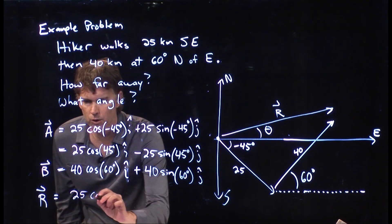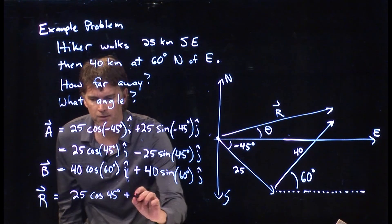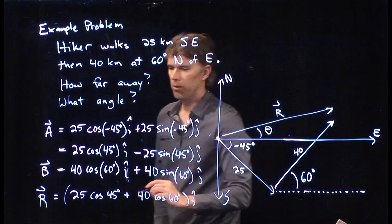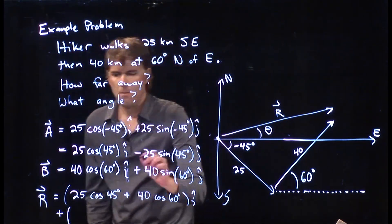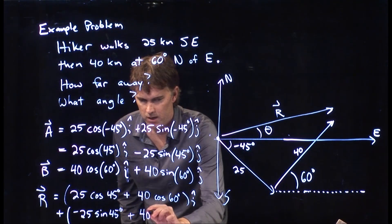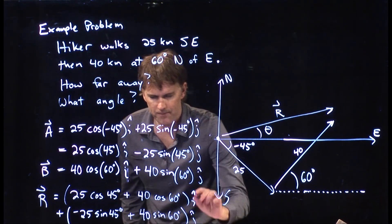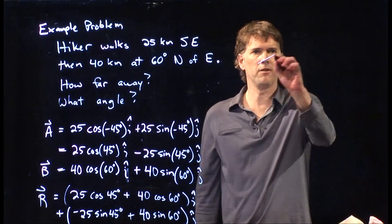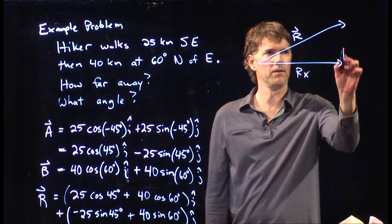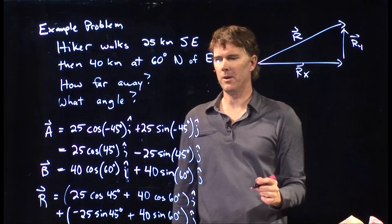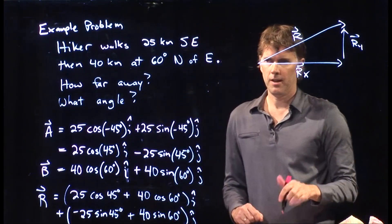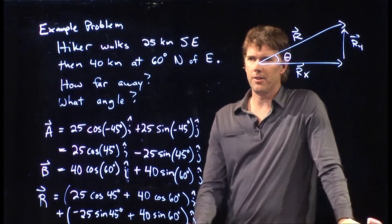So R equals: (25 cosine 45° + 40 cosine 60°) i-hat, plus (−25 sine 45° + 40 sine 60°) j-hat. We solved for vector R, which is made up of R sub x and R sub y. R sub x is all the stuff in the first parentheses, R sub y is all the stuff in the second parentheses. If this is the angle theta we're interested in, now we can calculate everything we need.